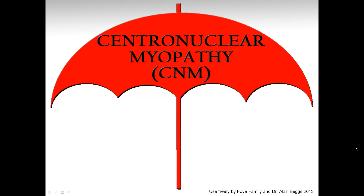This video illustrates centronuclear myopathy as an umbrella term — an overarching term that includes within it a number of other myopathies. A myopathy is a muscle disorder, and centronuclear means that on biopsy the nucleus — the DNA — within the cell is located in the center of the cell. That makes it a centronuclear myopathy, but within it there are a number of categories or subtypes.